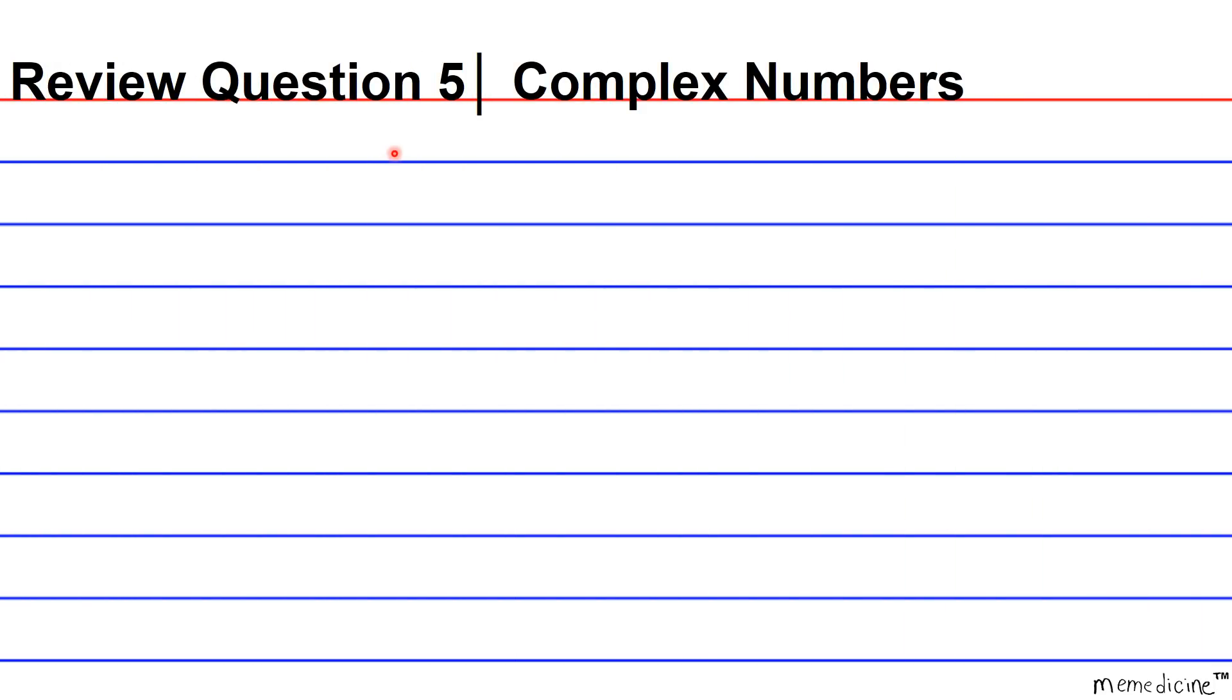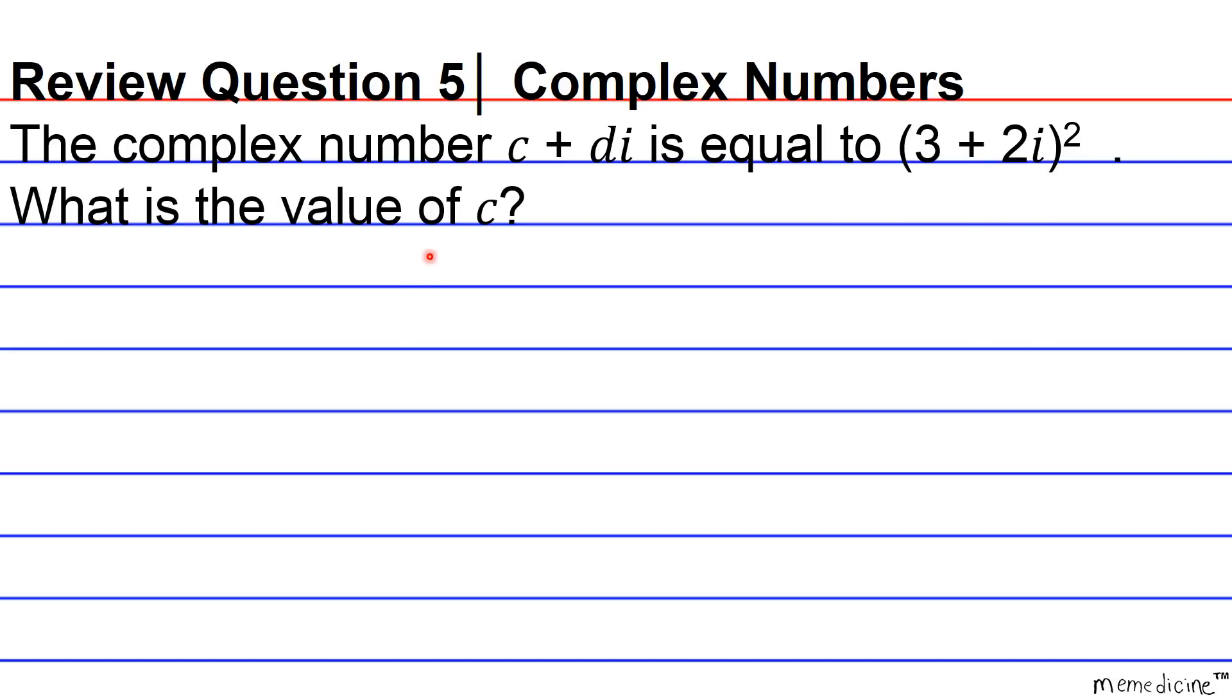Review Question 5, Complex Numbers. The complex number c plus di is equivalent to 3 plus 2i squared. What is the value of c?